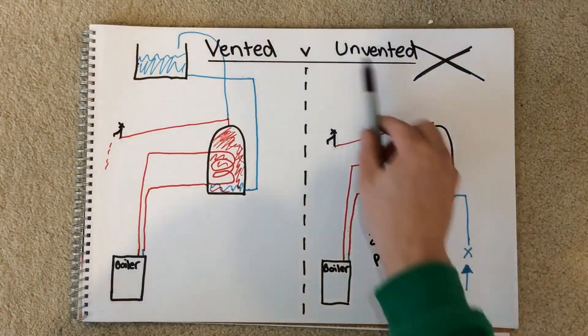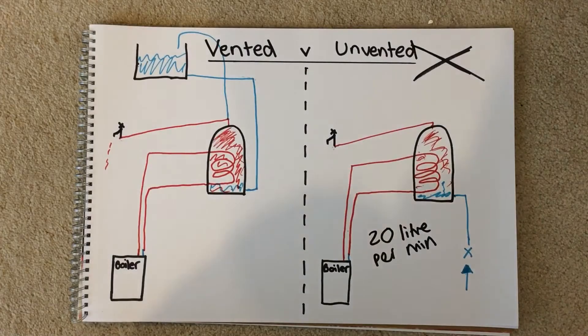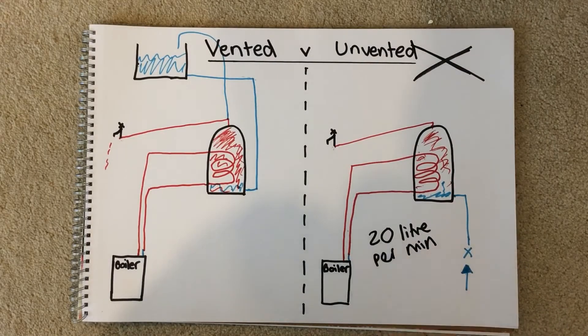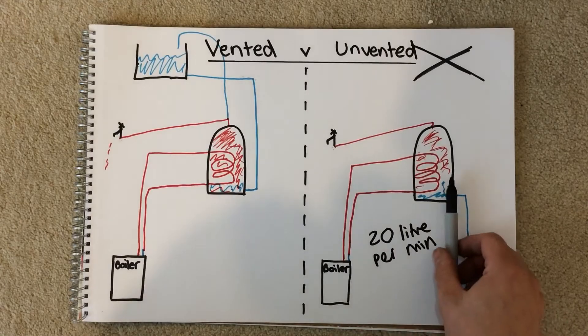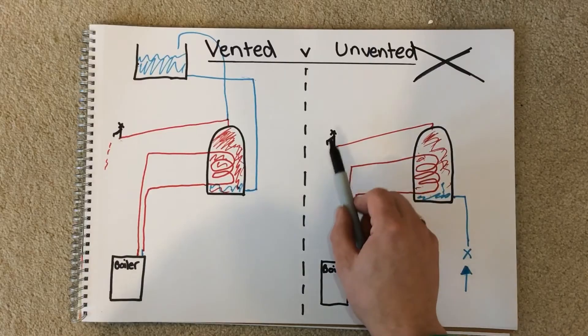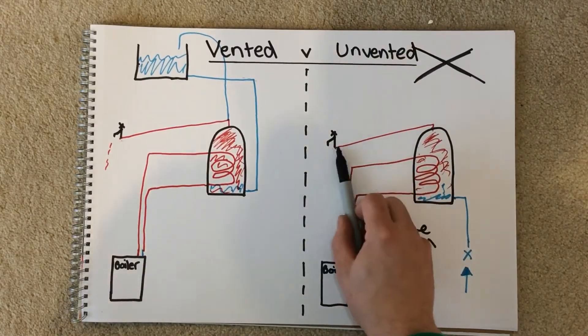So the main benefit of course from the unvented system is that if you have particularly good pressure, 20 or above litres per minute, then you're going to have fantastic water pressure coming out of your hot tap. So it's going to be really, really good.